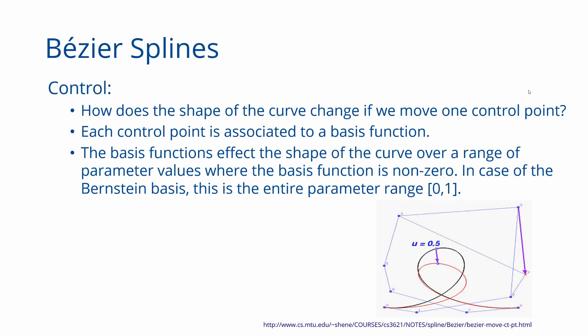Only at the starting point and at the ending point do they go to zero. Therefore, if I move a single control point — as shown in the example here where one control point has been moved — the entire curve moves. This was the original curve; the entire curve has shifted because every point on the curve depends on all the control points, since all the basis functions are non-zero everywhere in the interior of the curve, affecting all points on the curve.